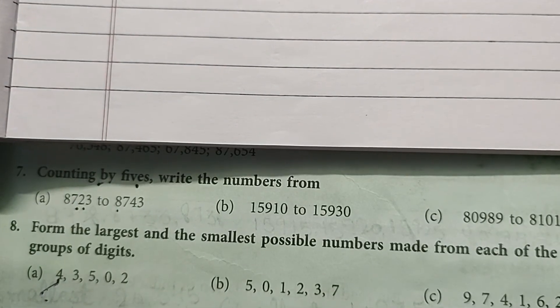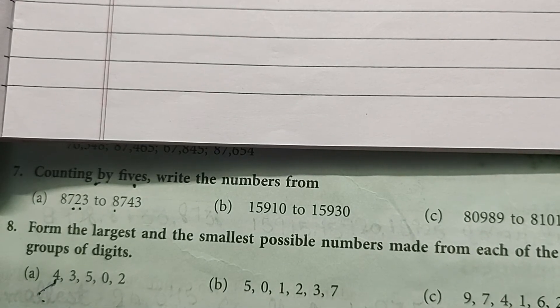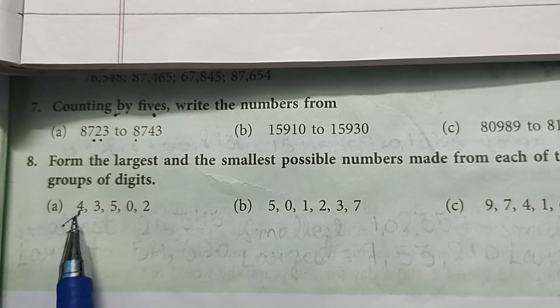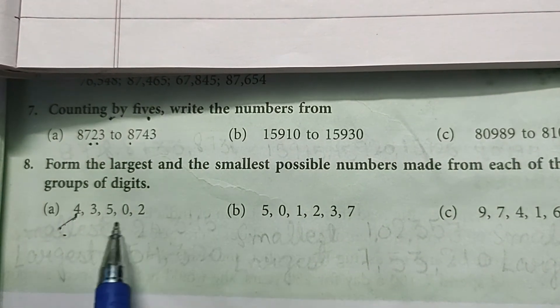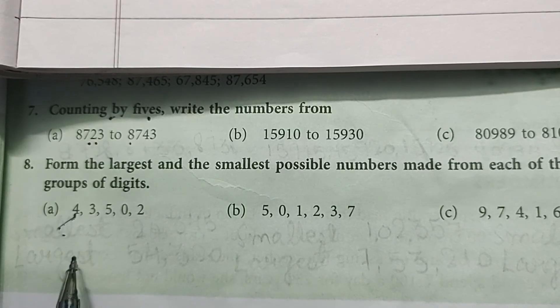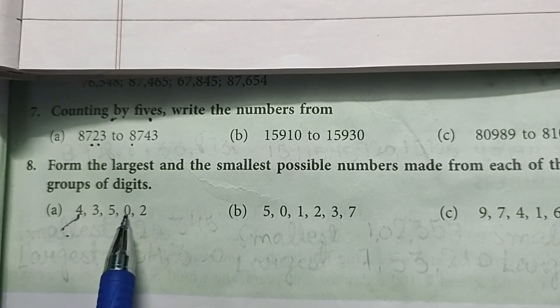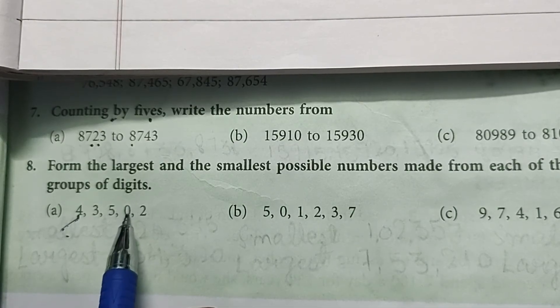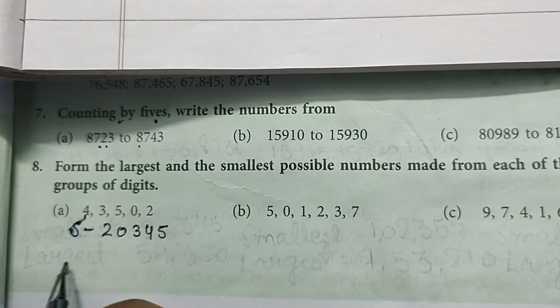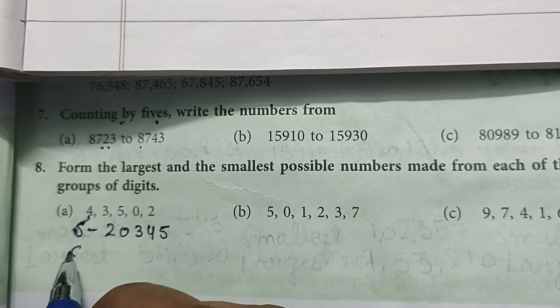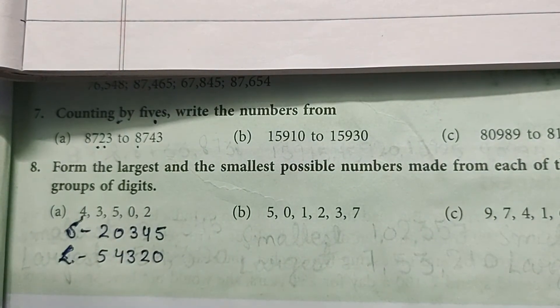Now question number eight: form the largest and smallest possible numbers made from each of the following groups of digits. Part A is 6, 2, 0, 3, 4, 5. For the smallest number, we write the smallest digit first except zero cannot be first, so 2, 0, 3, 4, 5, 6. For the largest, we write from greatest to smallest: 6, 5, 4, 3, 2, 0.